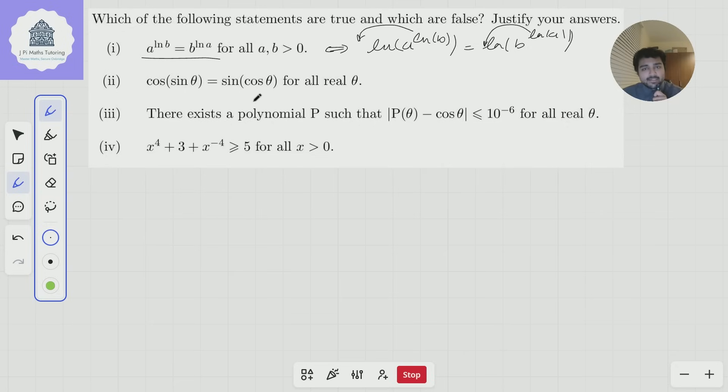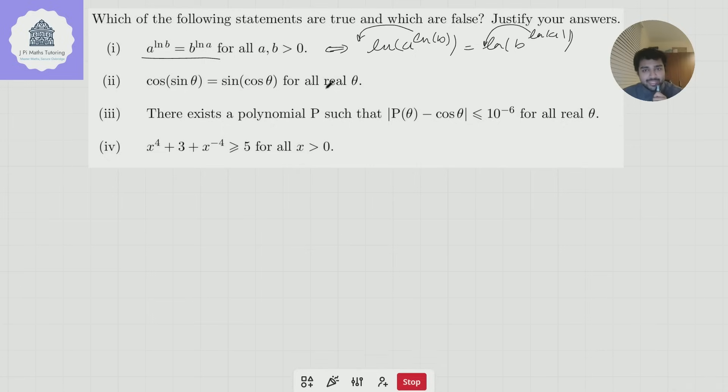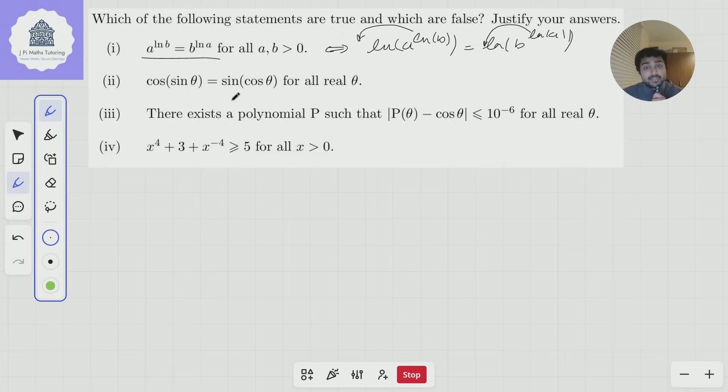Part 2. Is cos(sin θ) equal to sin(cos θ) for all real θ? No, is the answer. I mean, I think almost any value of θ would work here. Maybe there is a specific value of θ for which the equation is true, but definitely not true for all values of θ.